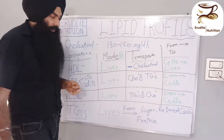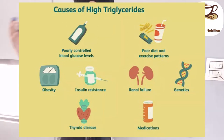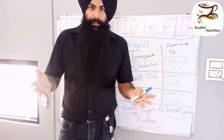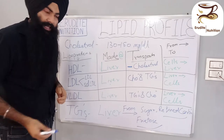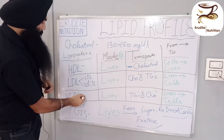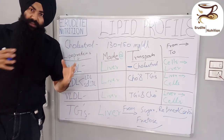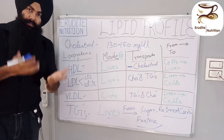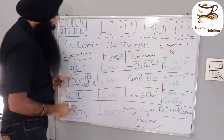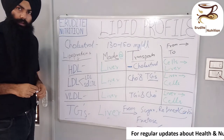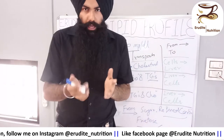Triglycerides are made from refined carbs, fructose, junk food, sweet candies, sweet sodas, and anything sugary you eat or drink. A surplus of sugar intake will increase the number of triglycerides. When triglycerides go up, the number of VLDL also goes up — because more passengers means you need more transport vehicles. Triglycerides also have some effect on LDL levels, but they don't affect HDL since HDL only transports cholesterol.